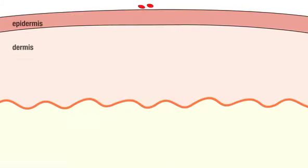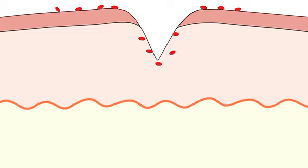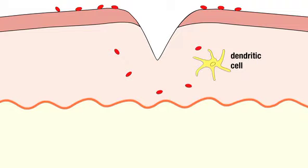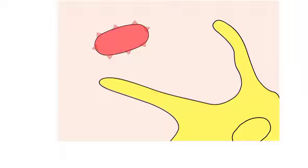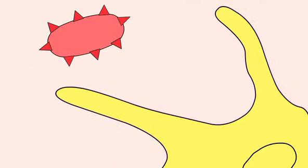In the initial stages of an immune response, the innate immune system recognizes the presence of pathogens and provides the first line of defense. Dendritic cells, which are circulating through the tissues, have the ability to recognize the presence of pathogen-associated molecular patterns, or PAMPs.